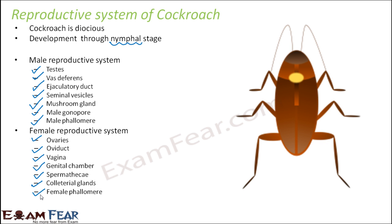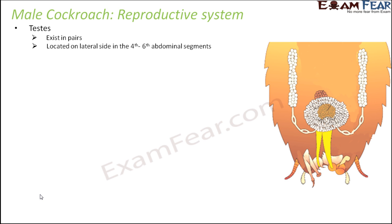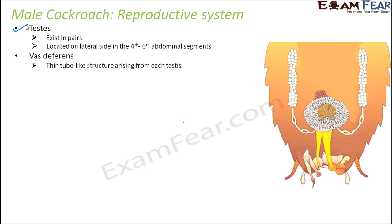We will now discuss the male and female reproductive systems in detail, one by one. Starting with the male reproductive system: the most important organs are the testes. They exist in pairs and are located on the lateral side in the fourth to sixth abdominal segments. The testes help in producing sperms — the male sex cells.